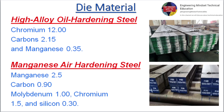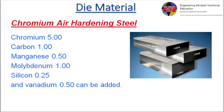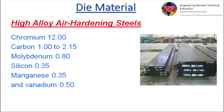Manganese air hardening steel: manganese 2.5, carbon 0.90, molybdenum 1.00, chromium 1.5, and silicon 0.30. Chromium air hardening steel: chromium 5.00, carbon 1.00, manganese 0.50, molybdenum 1.00, silicon 0.25, and vanadium 0.50 can be added.